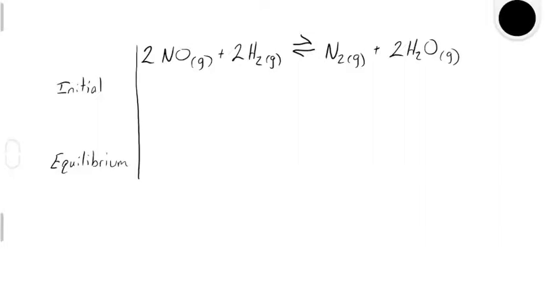We can say that for every one nitrogen molecule, there are two nitrogen monoxides. We can say that there are two hydrogens for every two nitrogen monoxides.